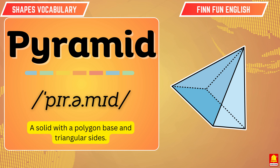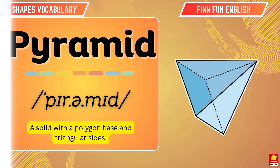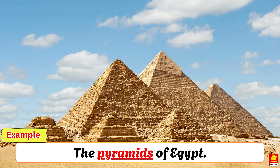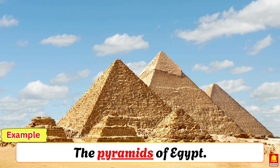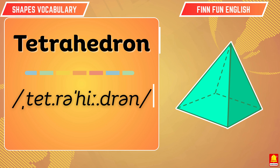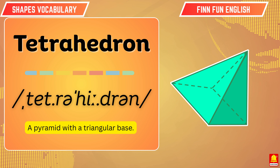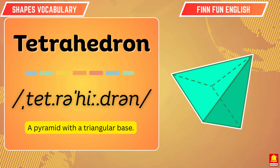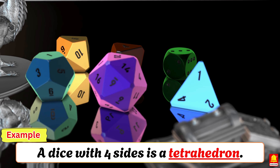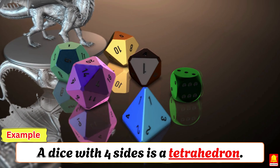Pyramid. The pyramids of Egypt. A dice with four sides is a tetrahedron.